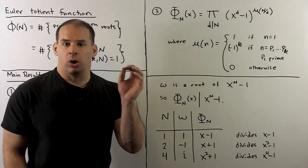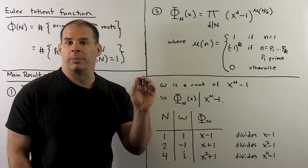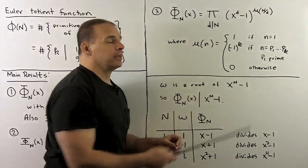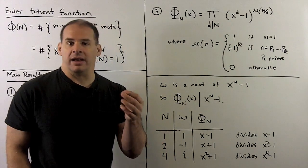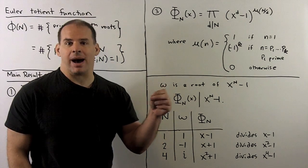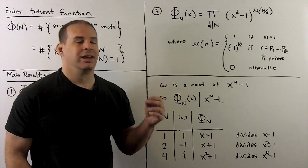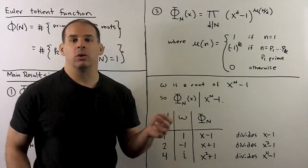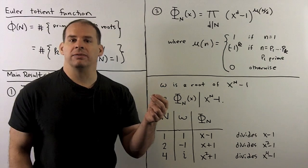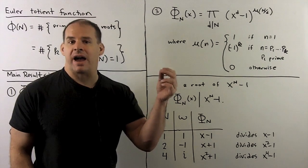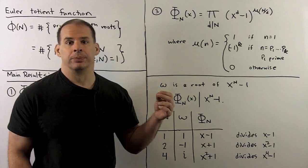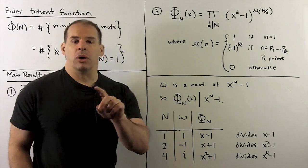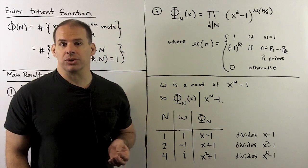Recall the Möbius function, defined on the positive integers: μ(n) = 1 when n = 1; when n is a product of distinct primes, μ(n) = (−1)^(number of those primes); and μ(n) = 0 otherwise. So μ(n) = 0 if and only if n has a factor that's a perfect square. We won't prove this formula here, but we'll use it to generate examples.